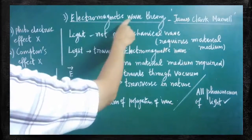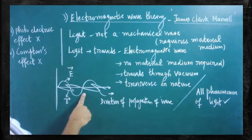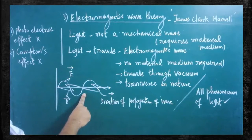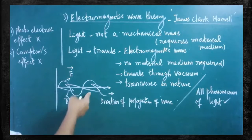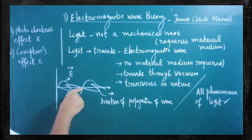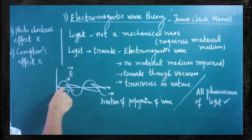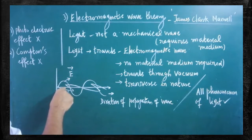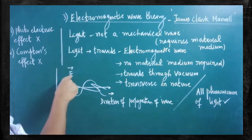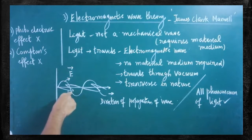This electromagnetic wave theory was already explained in chapter 5 in an elaborate manner. Maxwell introduced a new kind of wave called electromagnetic waves. As per electromagnetic wave theory, light travels such that its propagation takes place in both an electric field and a magnetic field — there are two vectors: an electric vector and a magnetic vector.